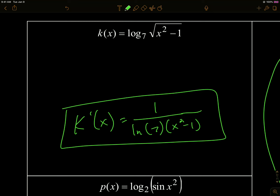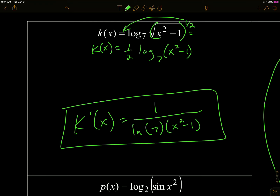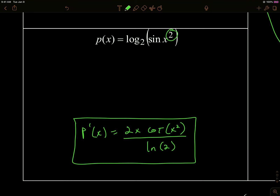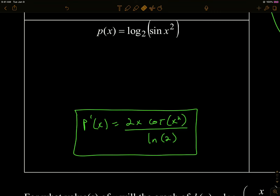Always apply your log properties before differentiating. For k(x) with a square root, think of the square root as the 1/2 power and bring that down to 1/2 using the power property of logs — this is not power rule, it's a log property. Then 1/2 is just a constant multiplier, and you do the log derivative on the remaining expression. Note: you cannot apply this to the last example because the square is only on the x inside the sine, not on the whole function.